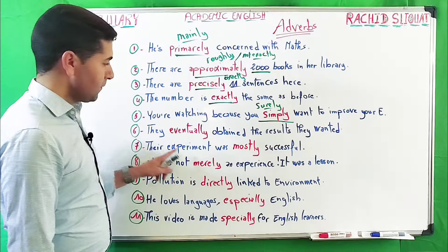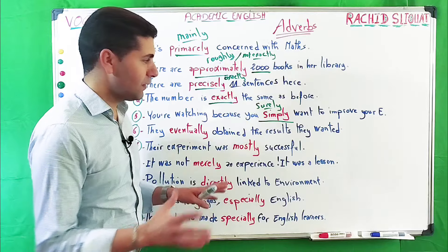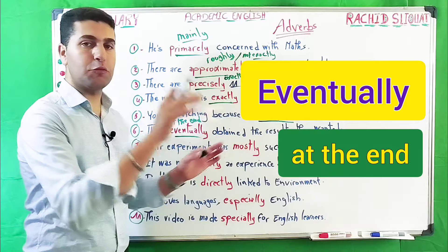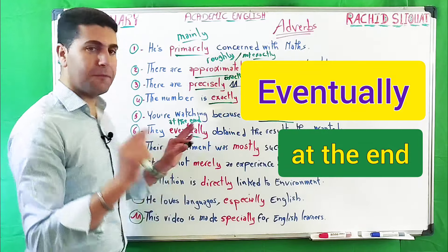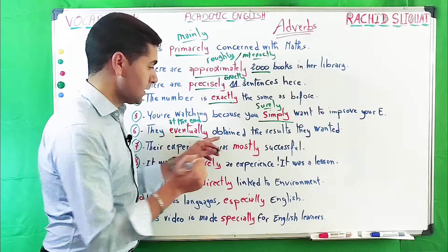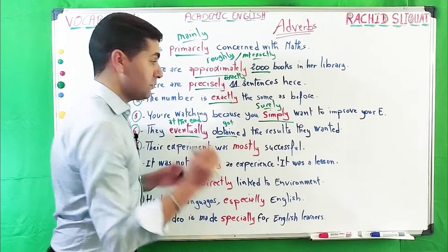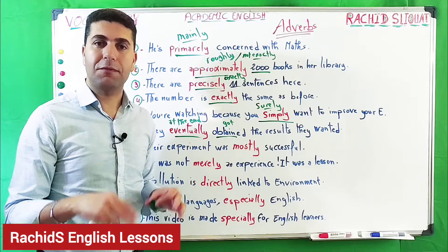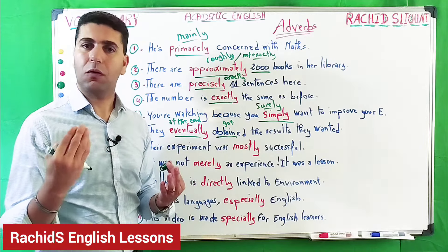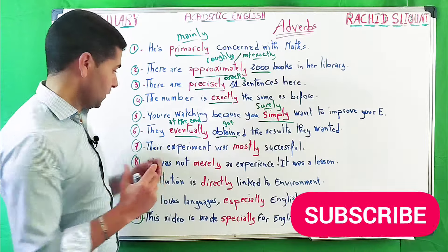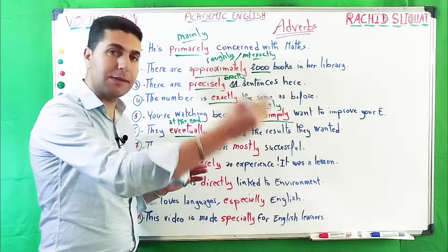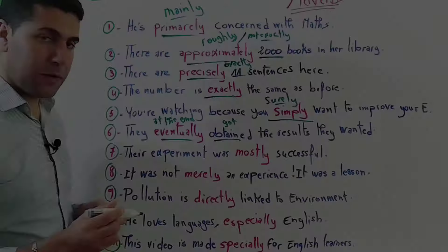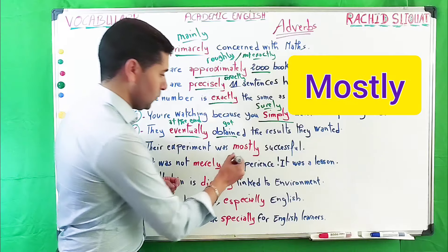'They eventually obtained the result they wanted.' 'Eventually' means at the end — at the end they obtained, they got, the result they wanted. We can also say 'he eventually reached his goal' or 'achieved his goal.' So 'eventually' means at the end he or they obtained the result they wanted.